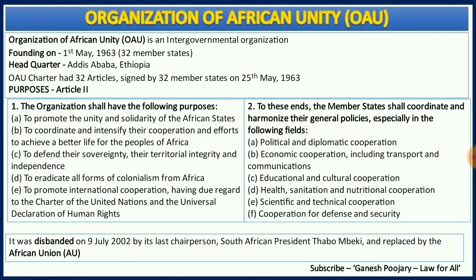The Organization of African Unity, famously known as OAU, is an intergovernmental organization. It was founded on 1st May 1963 and the headquarters is currently in Addis Ababa, Ethiopia. The OAU Charter had 32 articles and was signed by 32 member states on 25th May 1963. The purposes of this charter are discussed in Article 2.